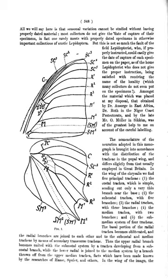Arculus: a crossvein between the radius and cubitus near the base of the wing in certain insects. Areola: 1. a small ring of color; 2. in crayfish, the hourglass pattern on the dorsal surface of the cephalothorax. Arolium: pad-like median lobe between the tarsal claws.